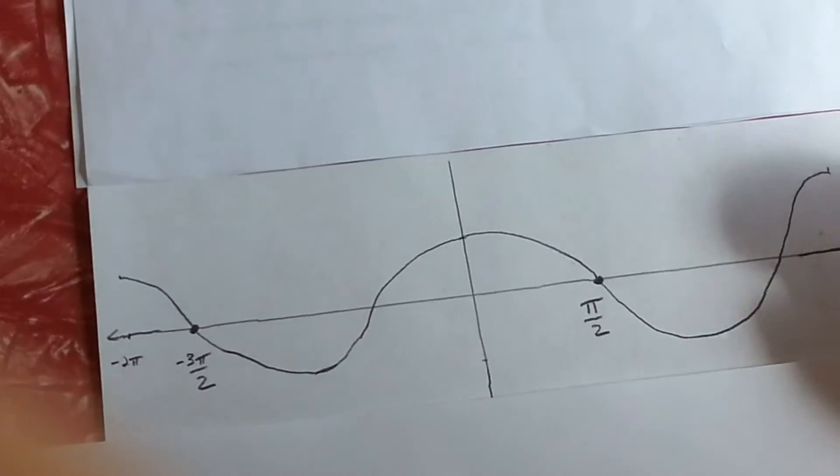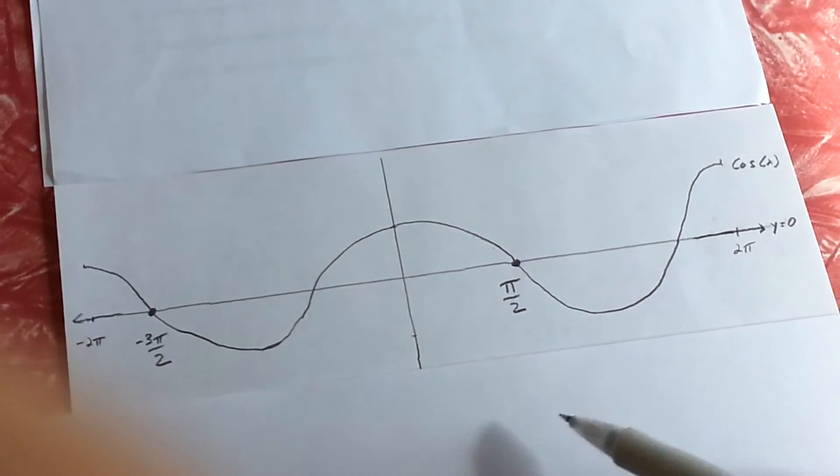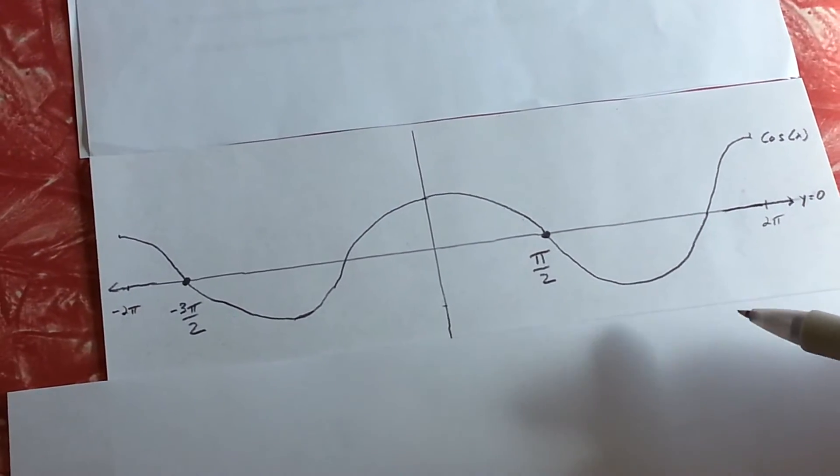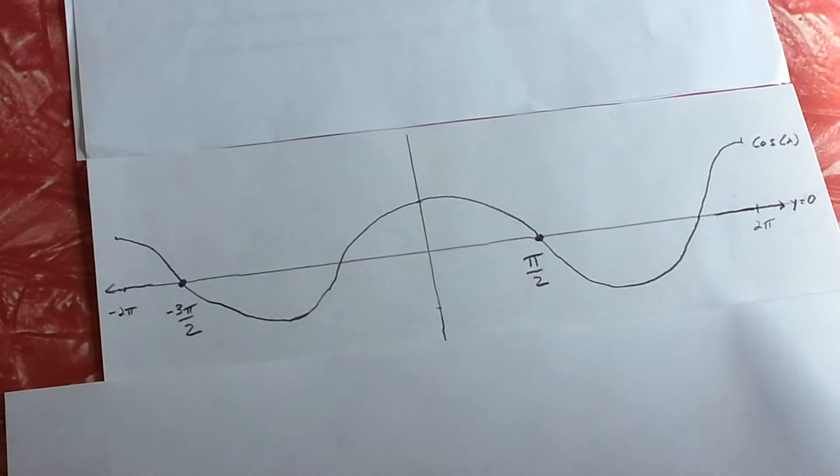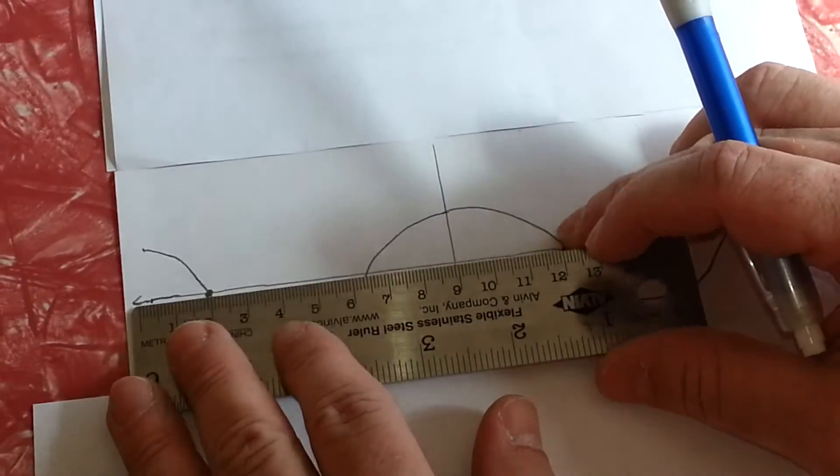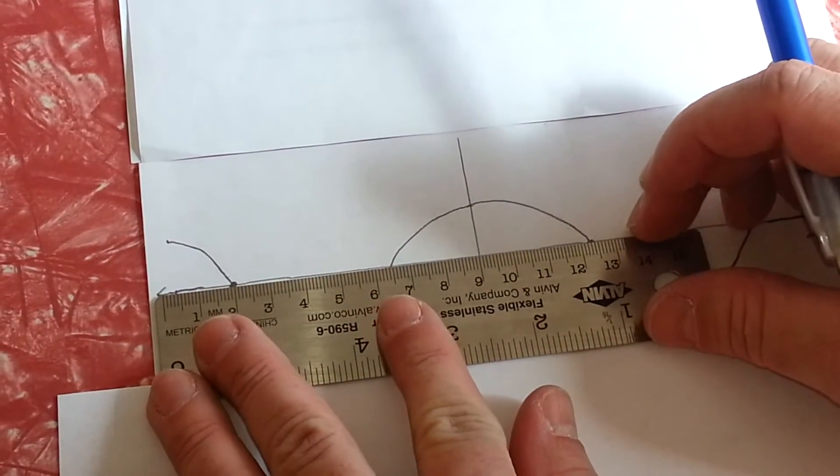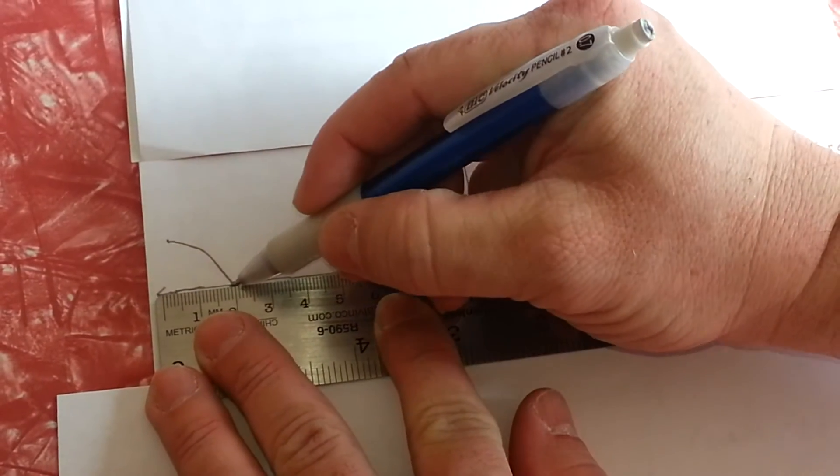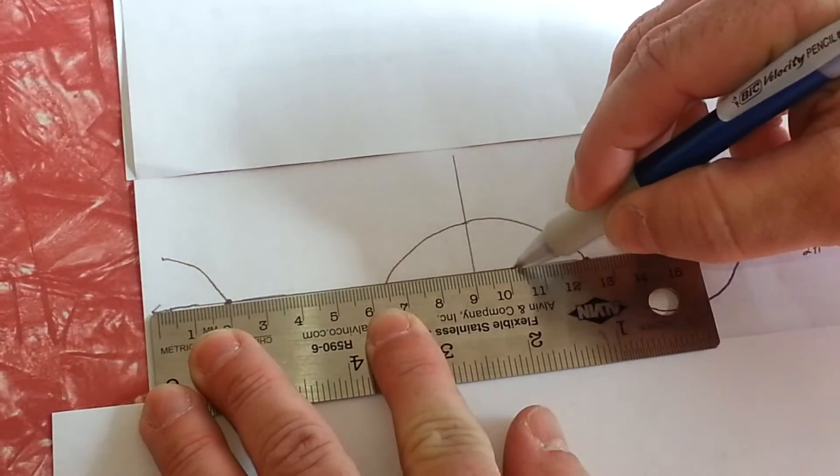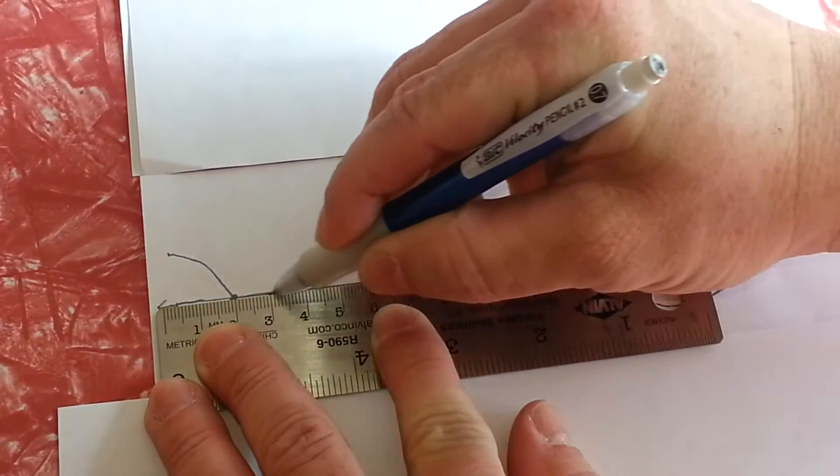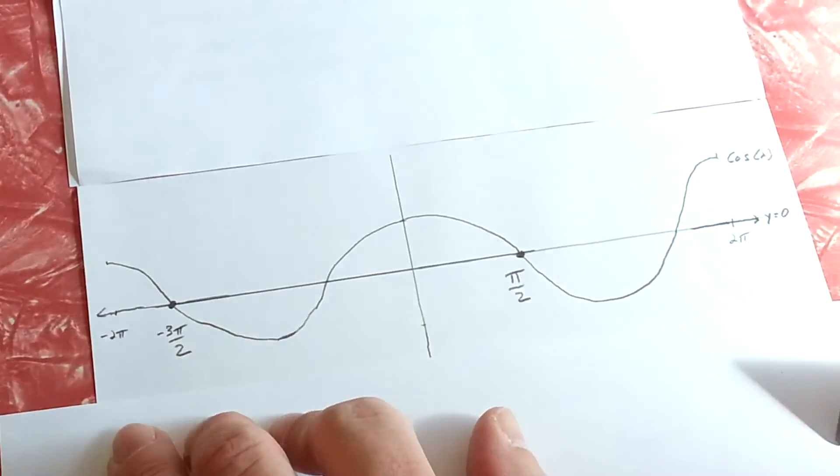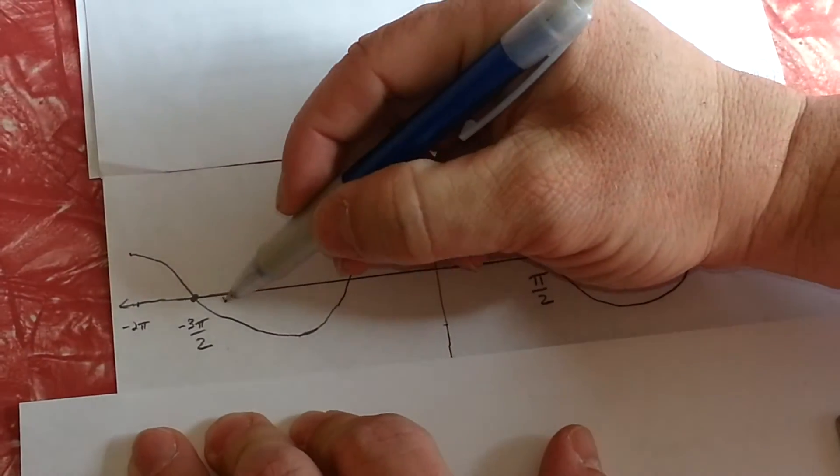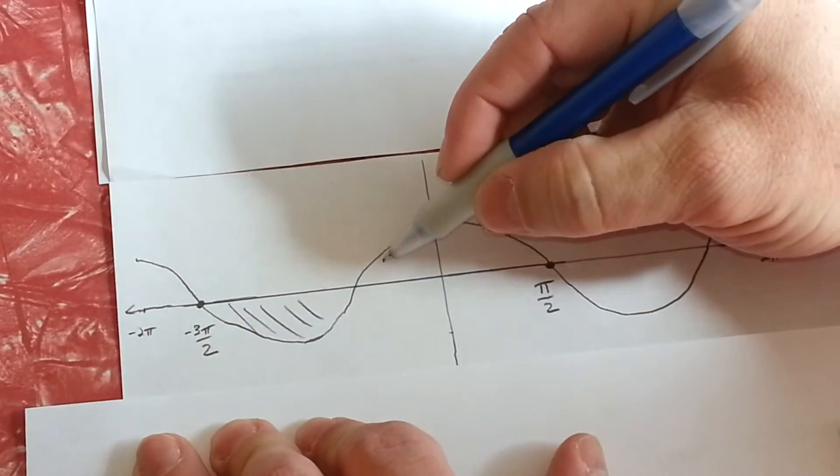We'll draw the cosine from negative 2 pi to 2 pi. We want to know the region between negative 3 pi over 2 and pi over 2, and we'll be bounded also by y equals zero. So these are the areas that we're looking for.